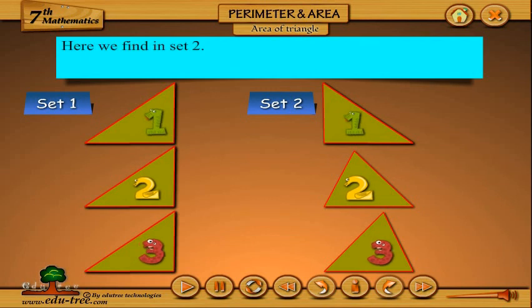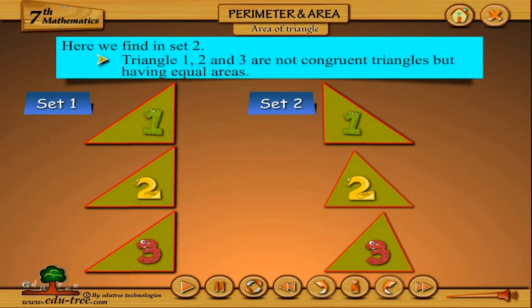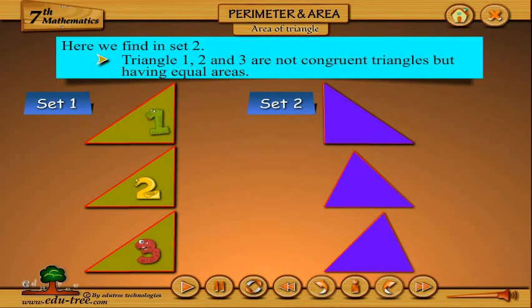Here we find in set 2, triangles 1, 2, and 3 are not congruent triangles but have equal areas.